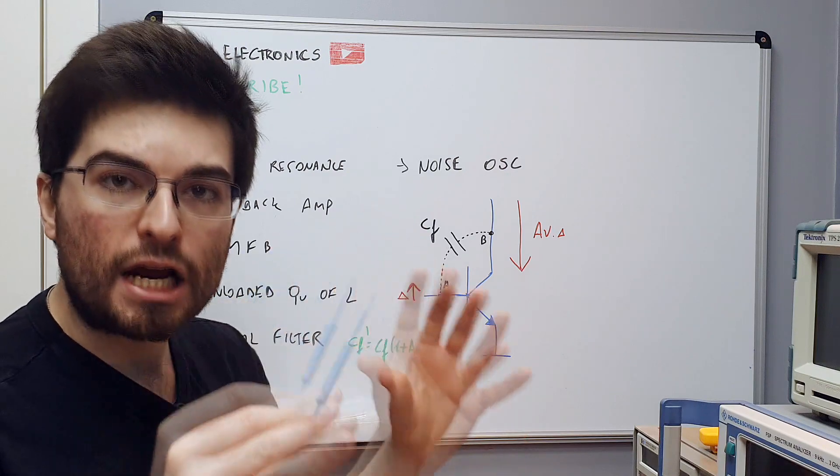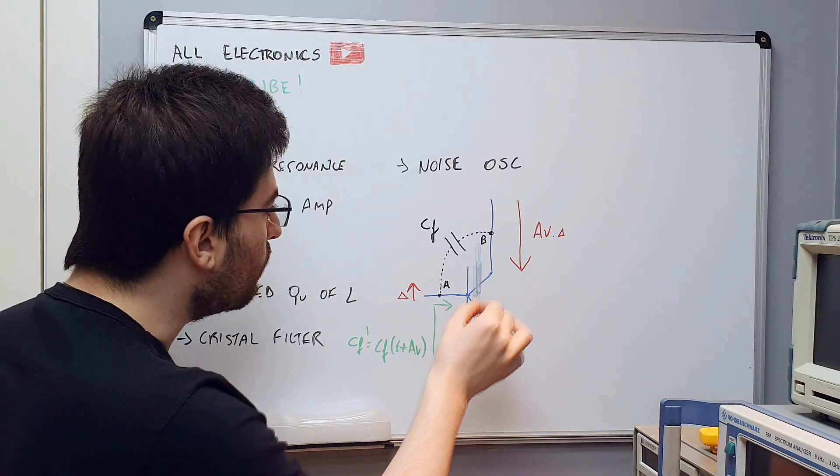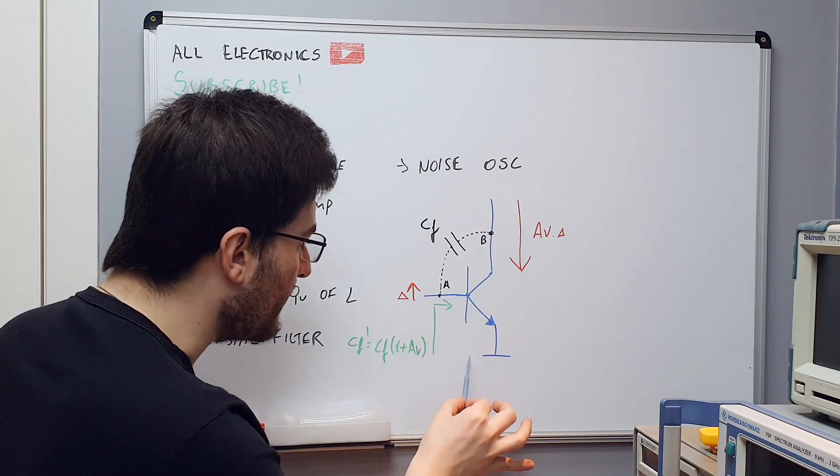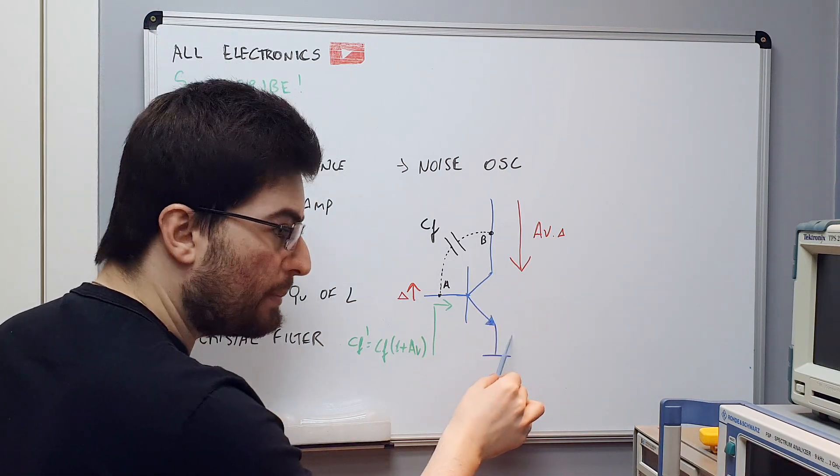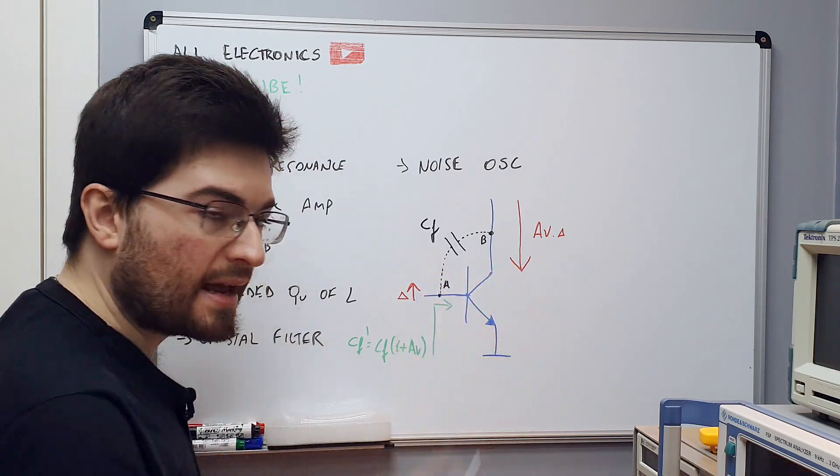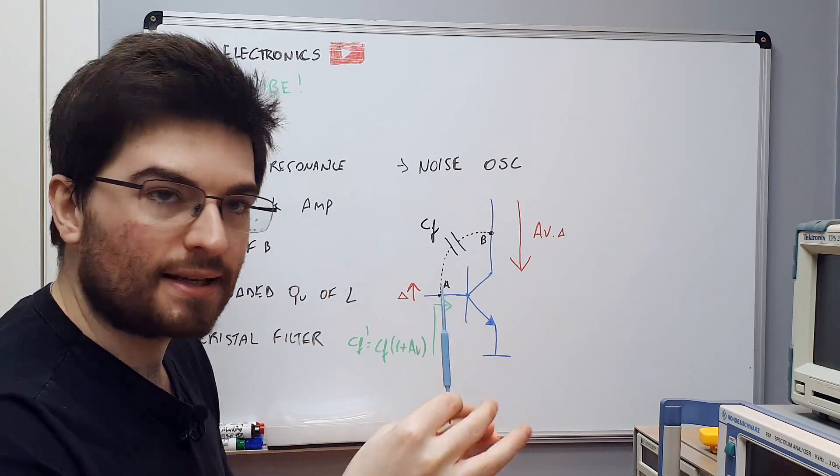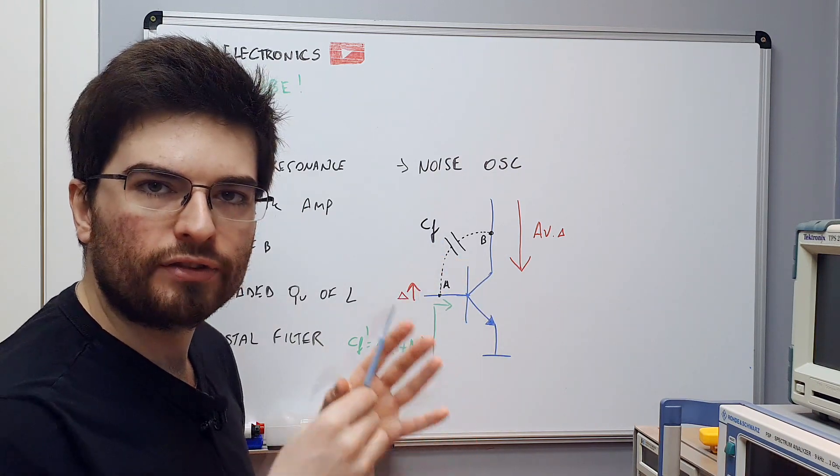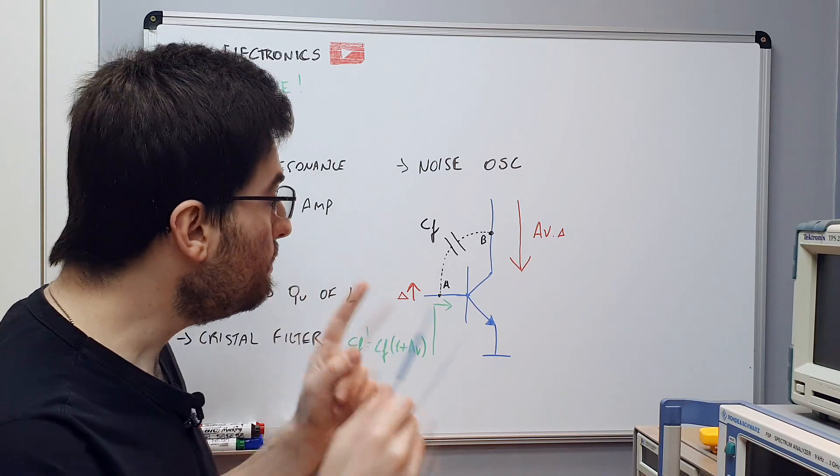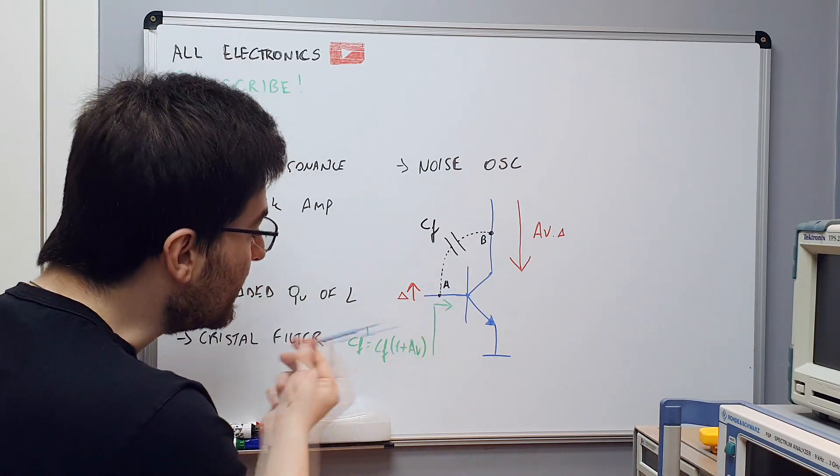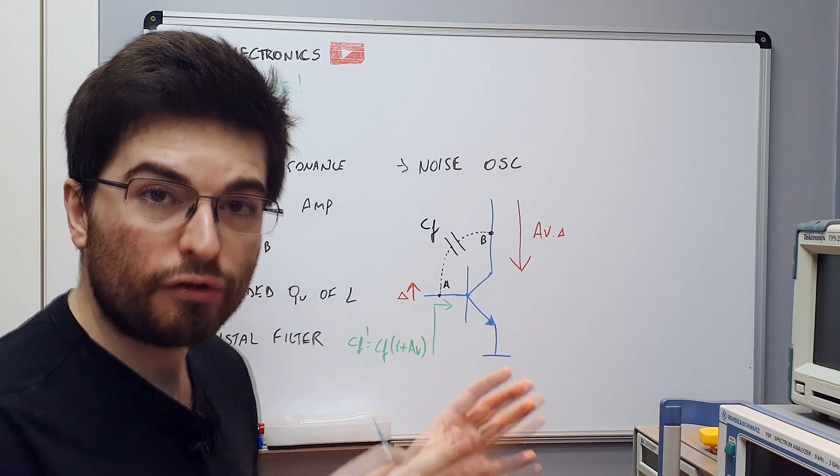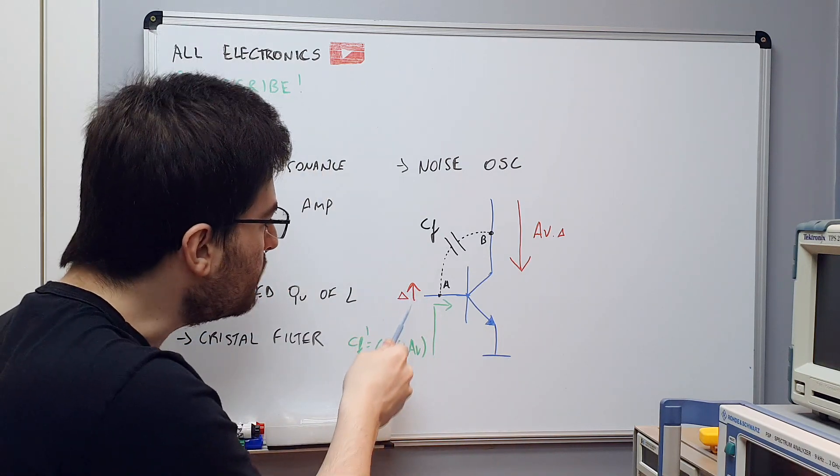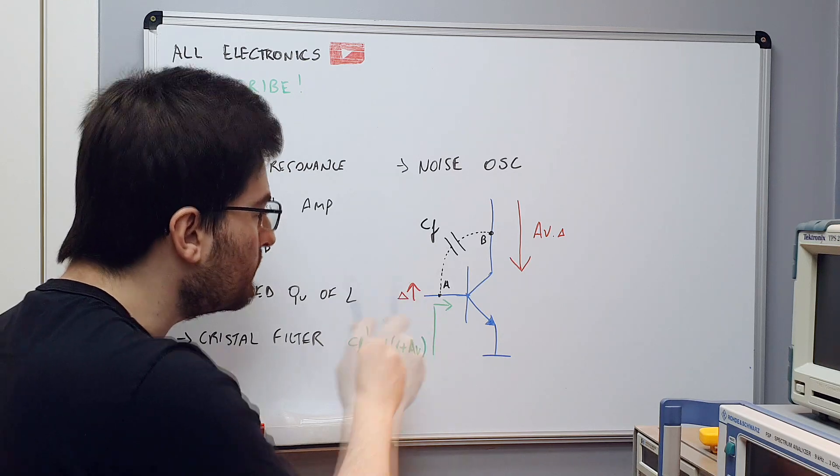The Miller effect is the amplification of the base collector capacitance of a transistor. The transistor has a base to emitter capacitance, a collector to emitter capacitance, and a base to collector capacitance. We call feedback capacitance the base to collector capacitance. The voltage gain of this amplifier will also amplify this capacitance when seen by the input. Let's think we have a small wiggle of voltage, a small increase in voltage here in the base of the transistor.